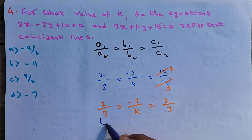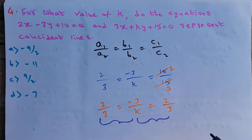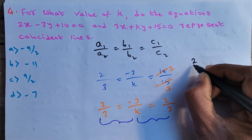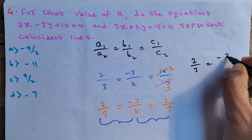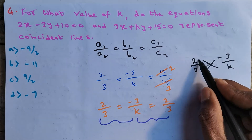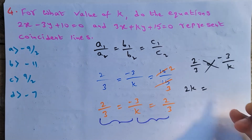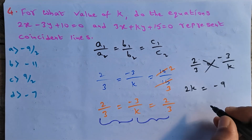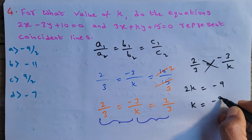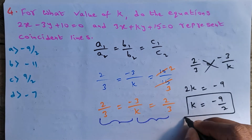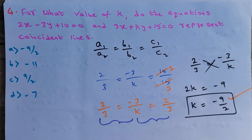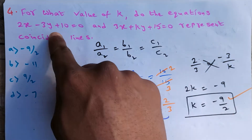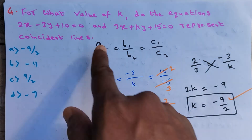Taking the first two ratios: 2/3 = −3/k. Cross multiplying: 2k = −9. So k = −9/2. If the k value is −9/2, then these two lines represent coincident lines.